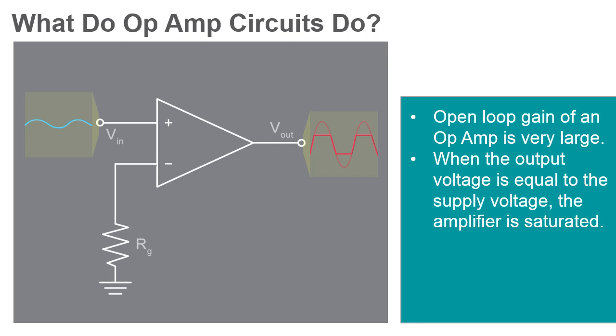Because the exact magnitude of the op amp's gain is not well controlled by the manufacturing process, it's impractical to use an op amp as a standalone differential amplifier. Op amps configured without negative feedback are referred to as comparators.